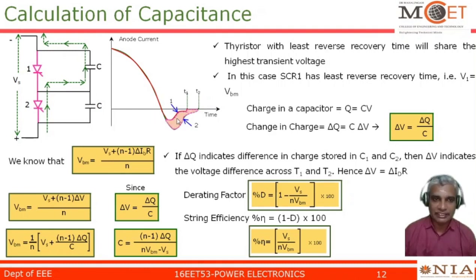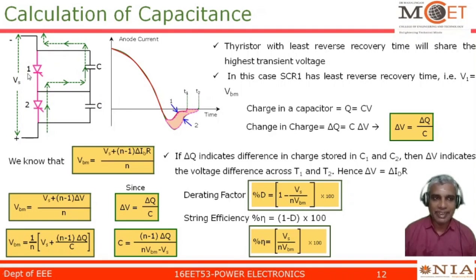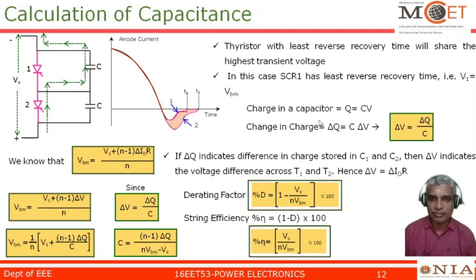The shaded portion represents the extra charge available in the circuit which we want to minimize in order to make the voltage sharing of the two thyristors equal. SCR1 has the least recovery time, so the voltage V1 equals VBM — that is the maximum, highest transient voltage. We know that charge in a capacitor Q equals CV. The change in charge, this shaded portion, is delta Q which equals C into delta V. From this, delta V equals delta Q divided by C. If delta Q indicates the difference in charge stored in C1 and C2, then delta V is the difference in voltage across thyristors C1 and C2.